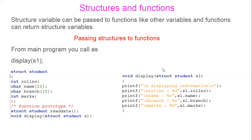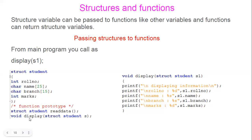First we will look at passing structures to functions. We will take a small example, the same one from the previous class. The structure consists of roll number, name, branch, and marks. We declare the structure in the main program. You have to declare a function prototype — in this case, void display, which returns nothing. When we say void, the function is returning nothing, but we are passing the structure as an argument to the function.